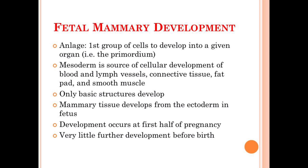The important points to note about mammary development inside the fetus: only the basic structures will form, and this occurs in the first half of the pregnancy. As you know, different germ layers are formed during embryonic development — ectoderm, mesoderm, and endoderm. The mammary tissues will develop from the ectodermal germ layer inside the fetus.